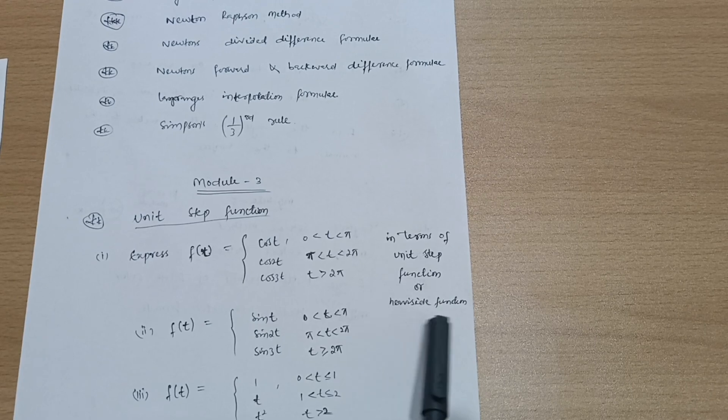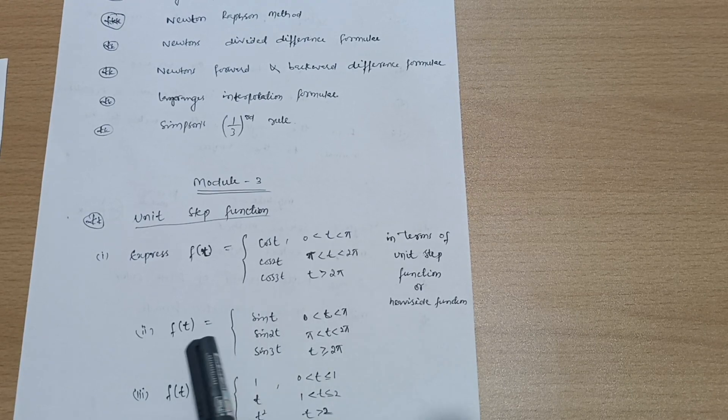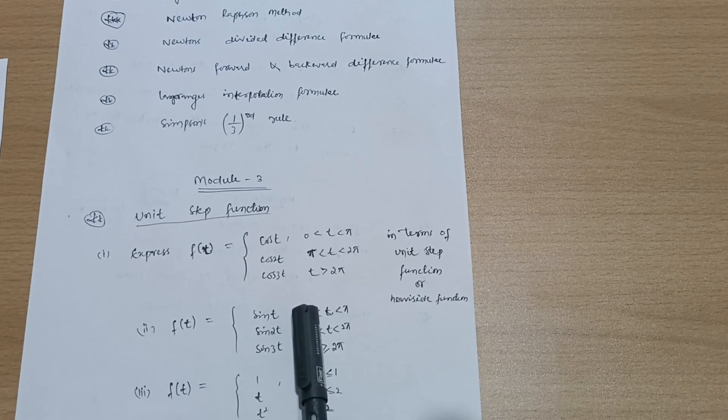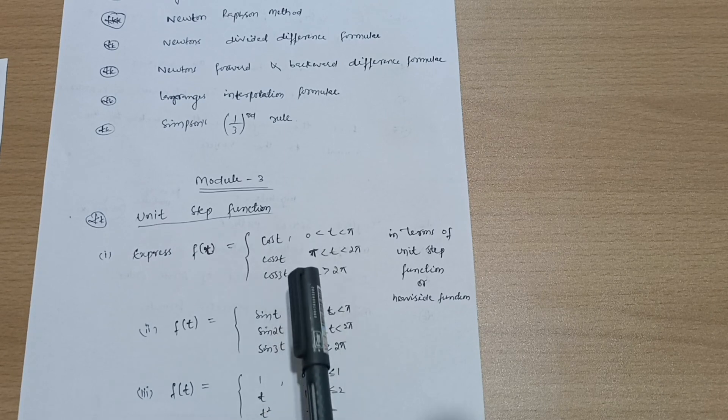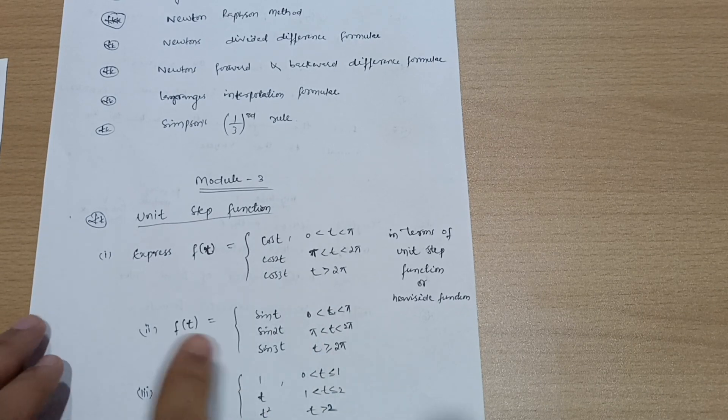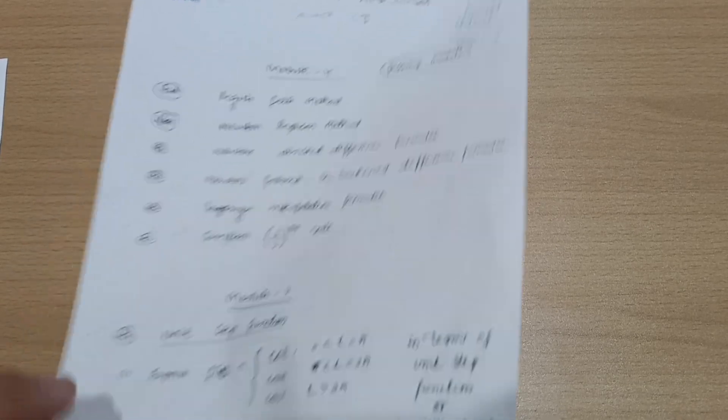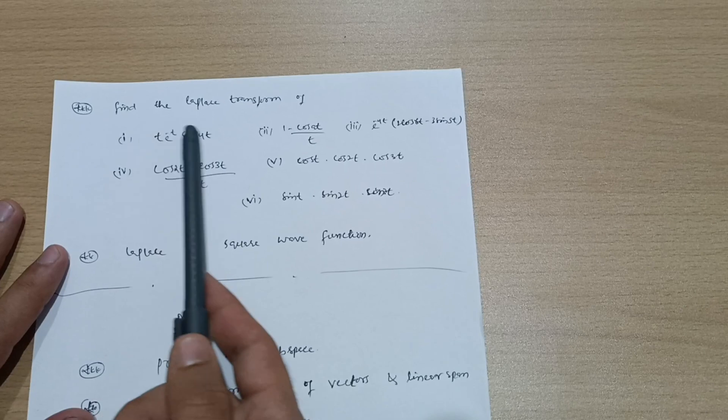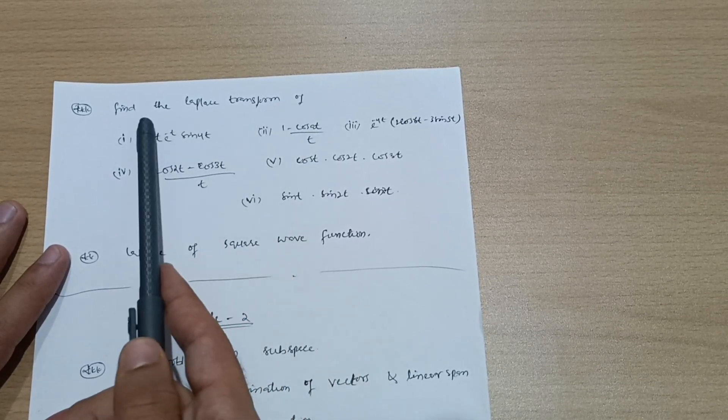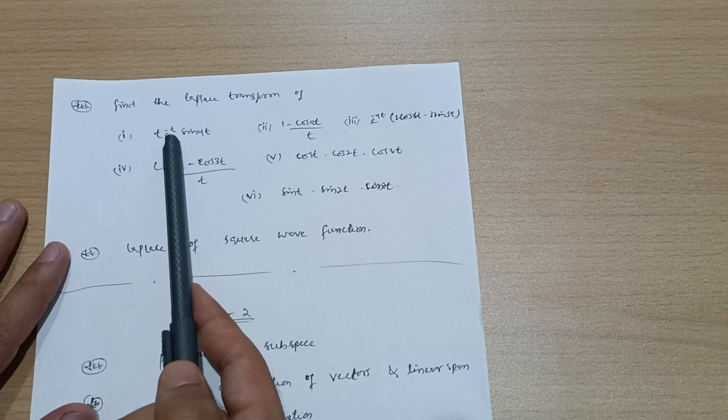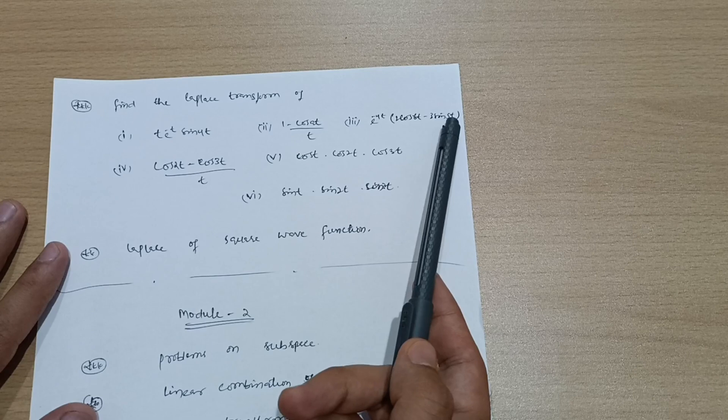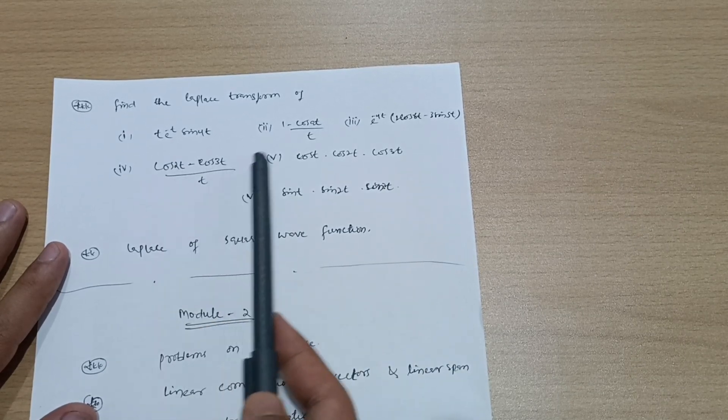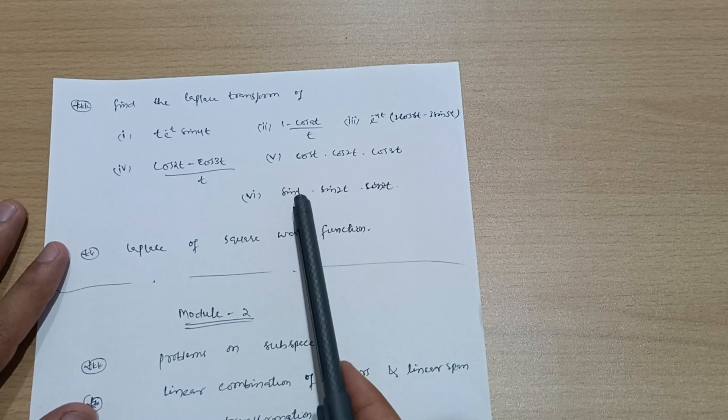Another one is sin t, sin 2t, sin 3t. Next is 1, t, t² with given intervals. These three are super important for unit step function in the Laplace transform chapter. You have to practice some questions on Laplace transform: t·e^(-t)·sin 4t, (1 - cos at)/t, e^(-4t)·(2cos 6t - 3sin 5t), (cos 2t - cos 3t)/t, cos t·cos 2t·cos 3t.